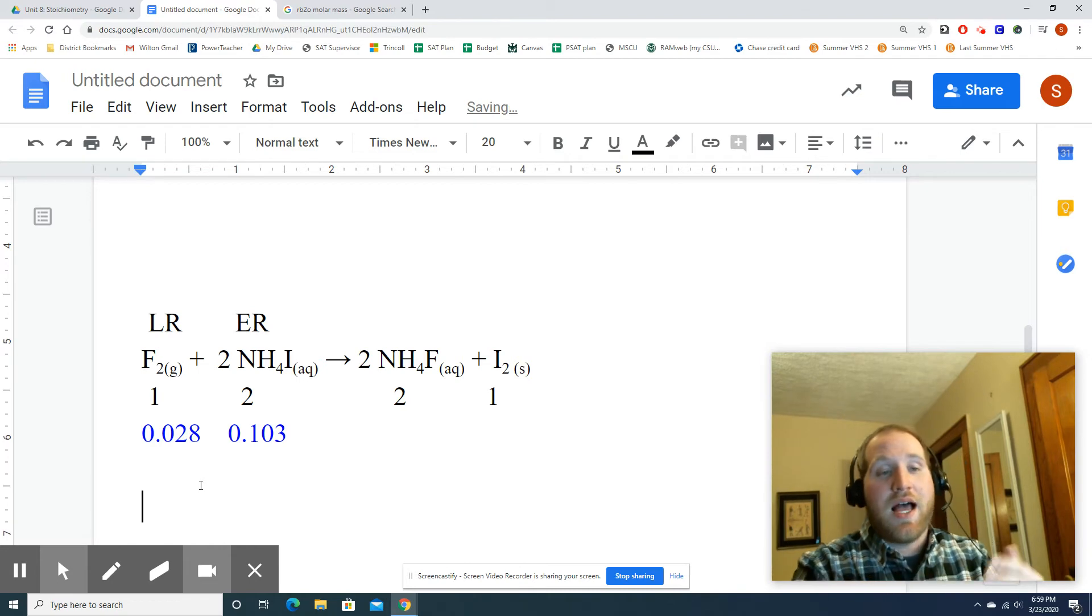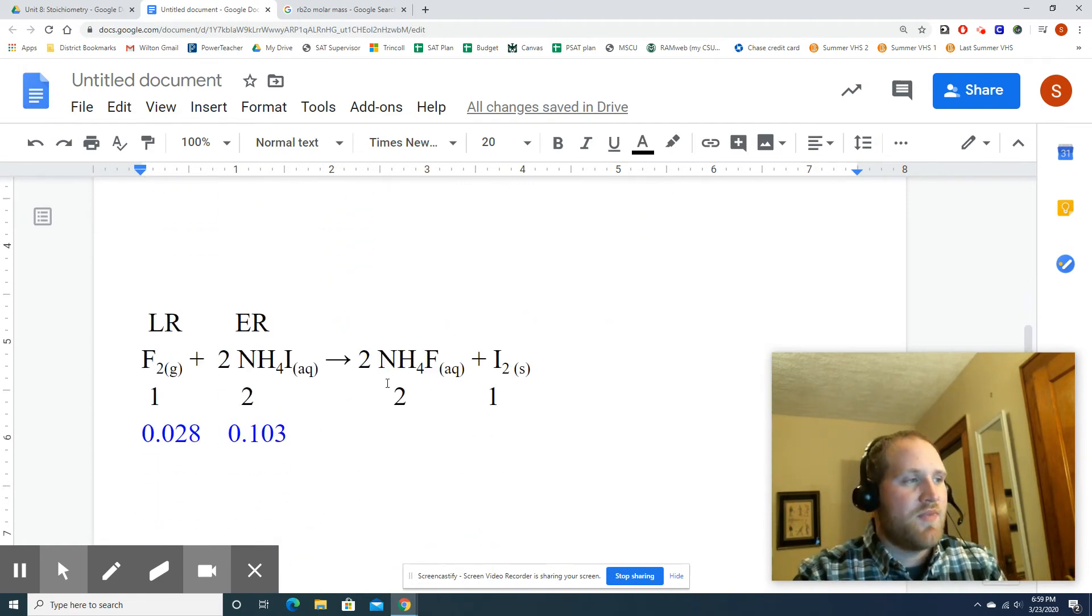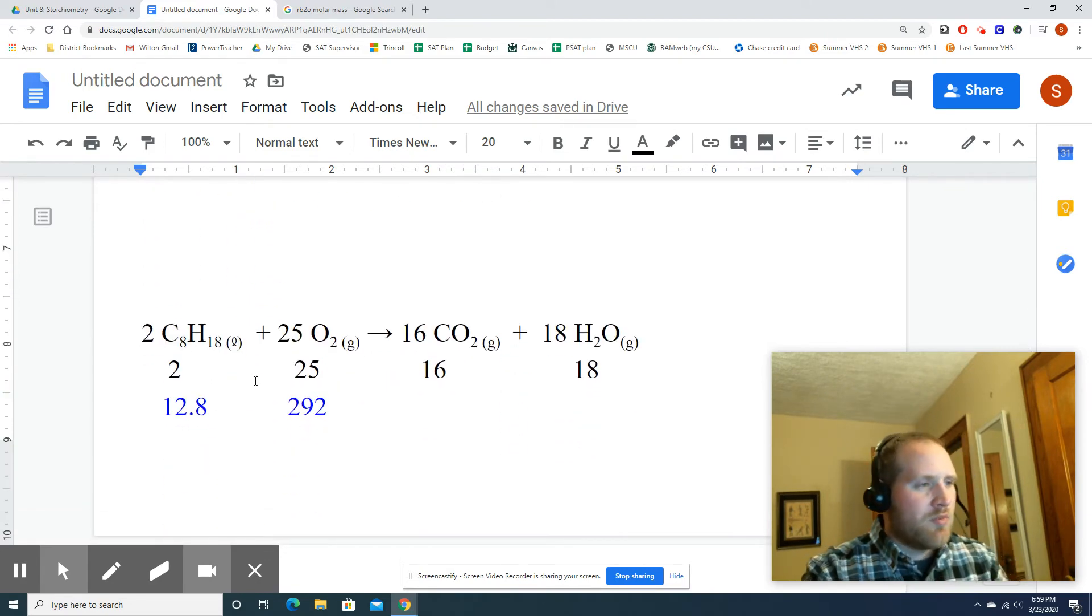Now, of course, these problems aren't done. I would normally ask you something like, what mass of iodine forms? Or I could say, what mass of precipitate forms? So you would then take the LR and apply this in a 2 to 1 ratio. In this problem, you would take the LR and apply it in a 1 to 1 ratio. All right. One more warm-up example. So this is the combustion of octane, which is a major component in gasoline, 12.8, 295. And again, we're assuming that you're good on your balancing, including combustion.